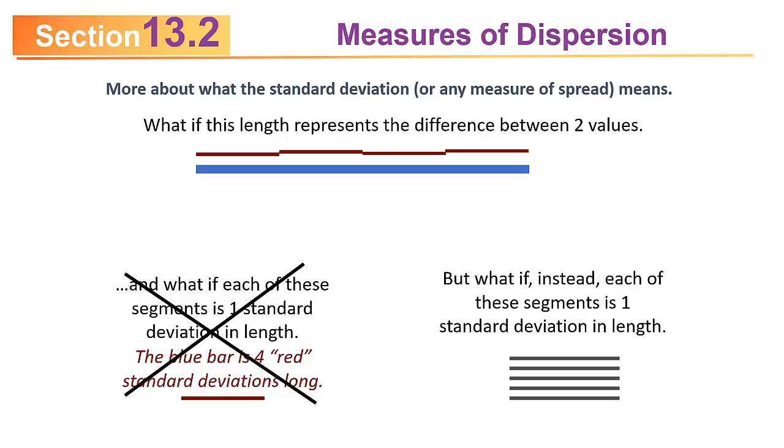But what if the bars for the standard deviations were really longer? What if on the right quadrant, those bars represented one standard deviation in length? If I stretch those bars out, it takes only three of those. So the wider bar is three standard deviations long if the standard deviation is the length of one of the bars on the right. But the wider bar is four standard deviations long if the standard deviation is the length of the bars on the lower left quadrant.